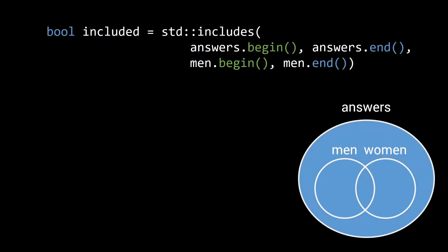The standard includes algorithm can be used to check whether one set is fully contained in another. It takes two sets as input, again using an iterator range, and it then returns a boolean value indicating whether the second set is fully included in the first.